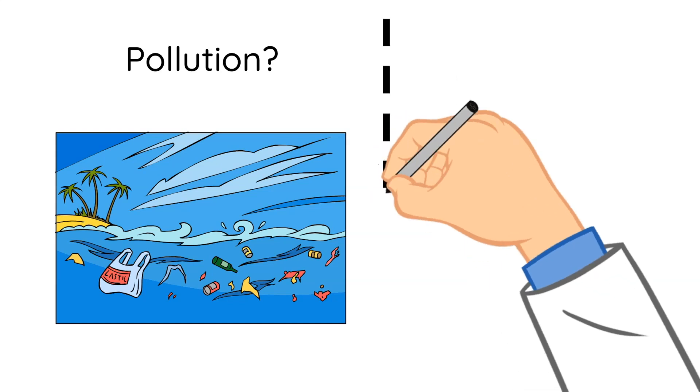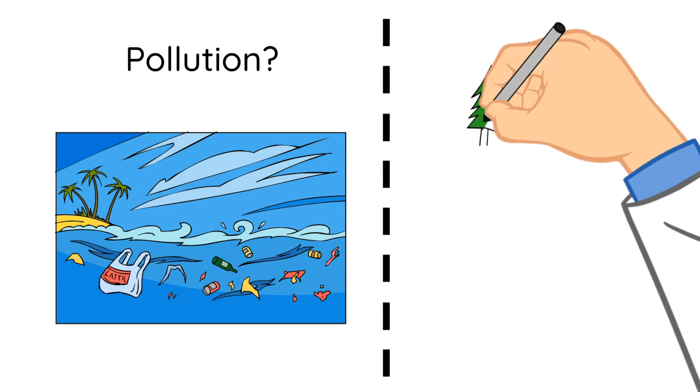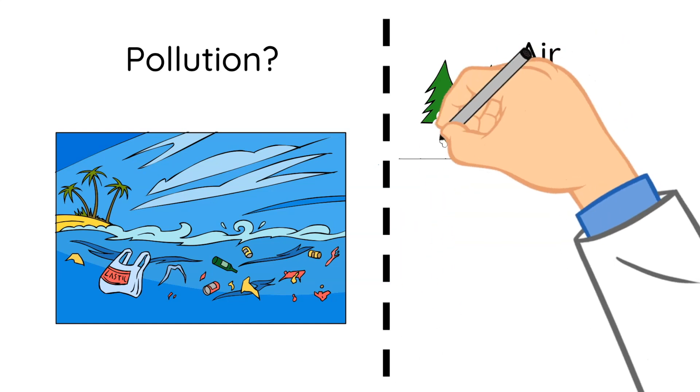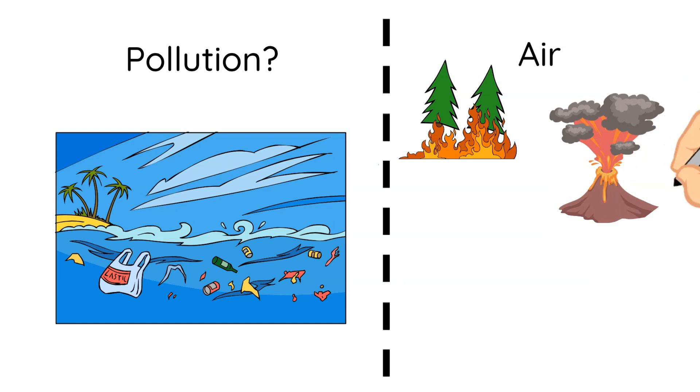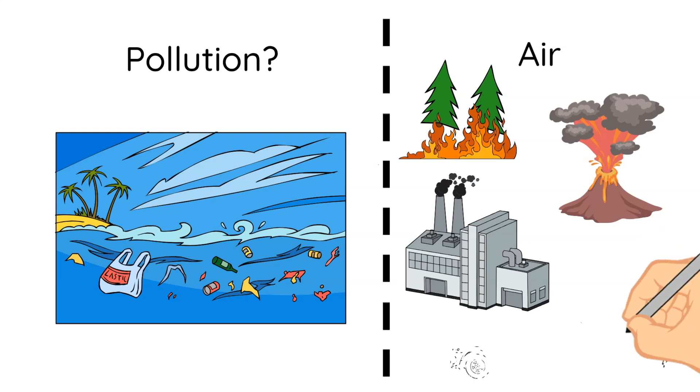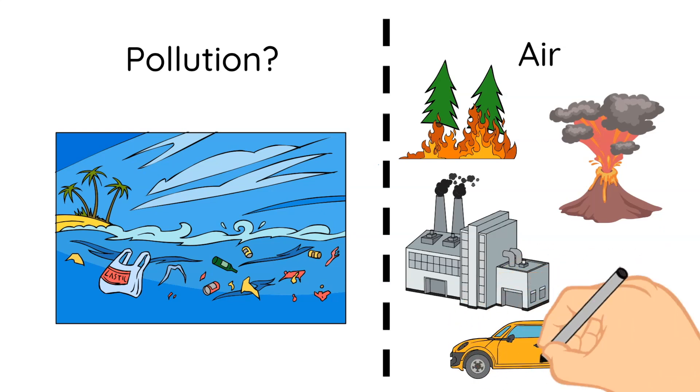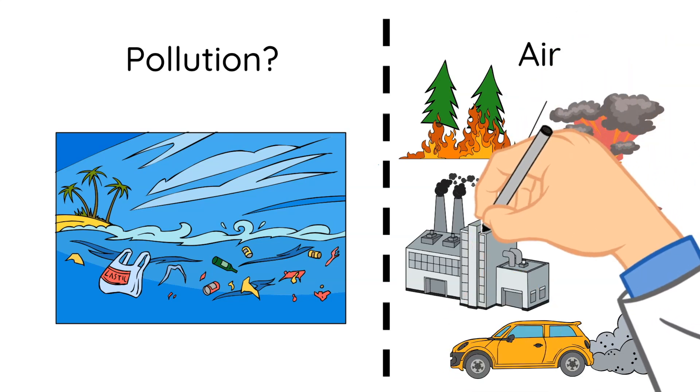So first let's talk about air pollution. Air pollution can be caused by many things such as wildfires, volcanoes, or even chemicals that are used in factories. Most of our air pollution though comes from burning what is called fossil fuels. Fossil fuels are things like coal, oil, and natural gas.